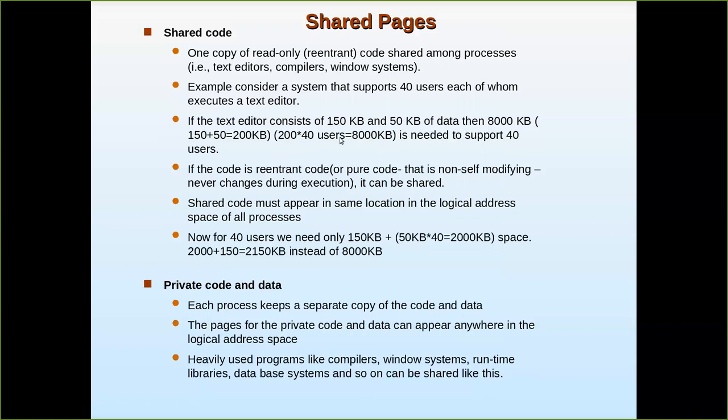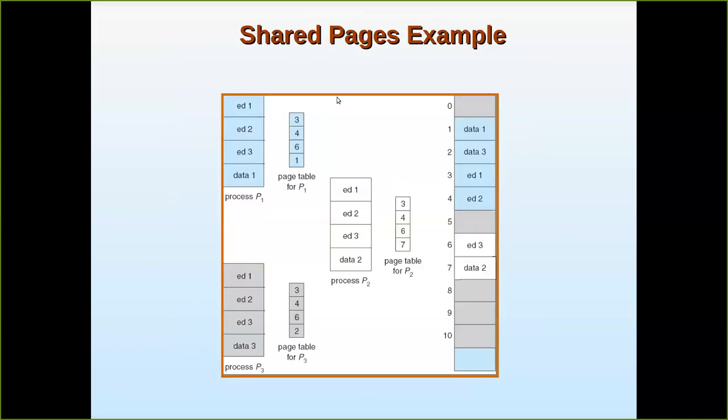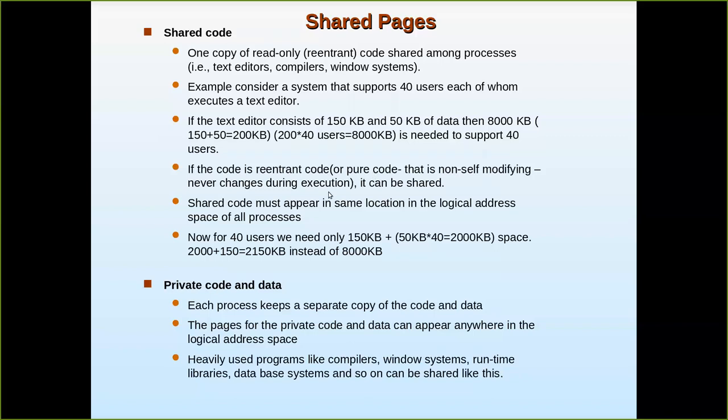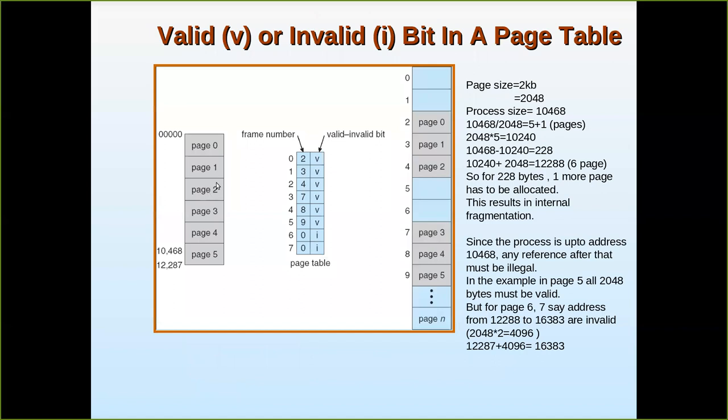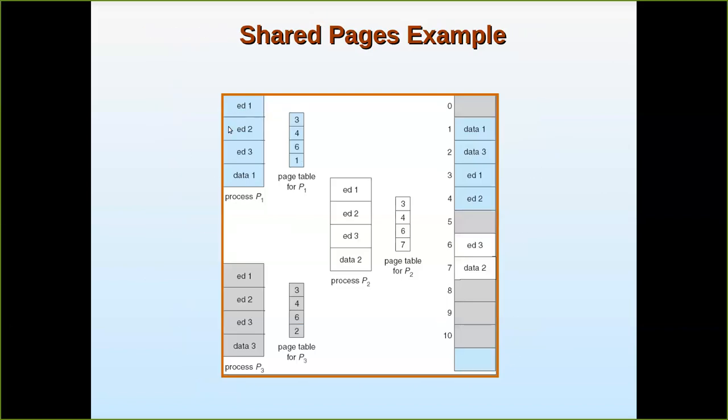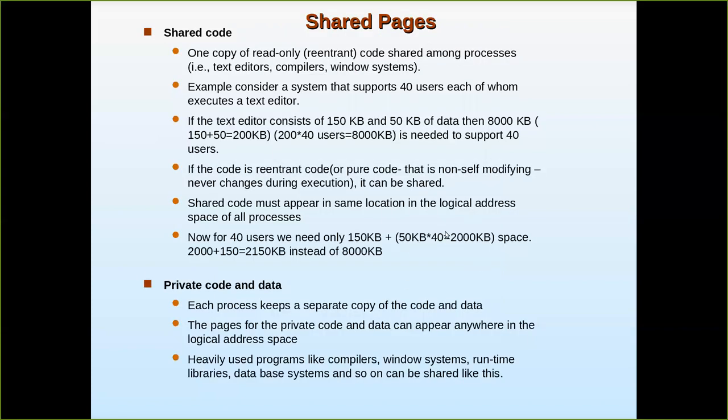So that much space is needed for 40 users. But if the code is re-entrant, if it is shareable and non-editable, then how much space can be given? For example, 150 KB can be stored only one time. Let us imagine here each page, this is 50 KB, this is 50 KB, this is 50 KB, and this is 50 KB, put together 200 KB. So this 150 is occupied only one time in the main memory. And then 50 KB into 40 means 2000 KB space. So totally 2000 plus 150 is 2150 KB instead of 8000. See how much space is saved.